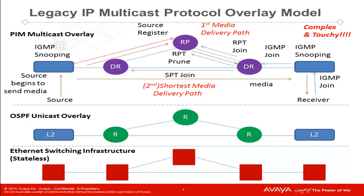This lends to an environment that is complex and touchy. Network topology changes and expansions are overly complex and intrusive to the service. Also note that this is for one routing environment only. In multi-tenant networks, this has to be replicated for every tenant that requires separate IP multicast services. This creates an environment where the number of software state machines becomes prohibitive and begins to affect the performance of the overall network service.